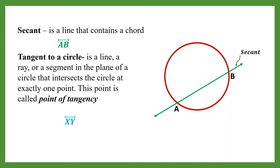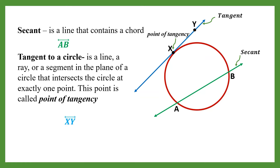Next, we have the tangent to a circle. If it's a line, a ray, or a segment in a plane of a circle that intersects the circle at exactly one point, this point is called the point of tangency. For example, we have line XY — this is what we call a tangent, and here is the point of tangency. That is the definition of a secant and tangent to a circle.